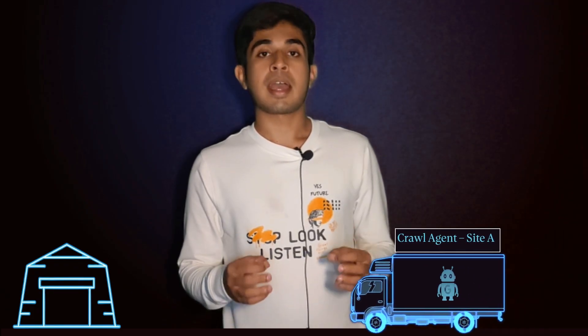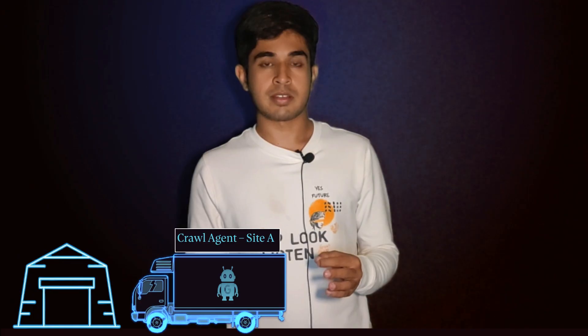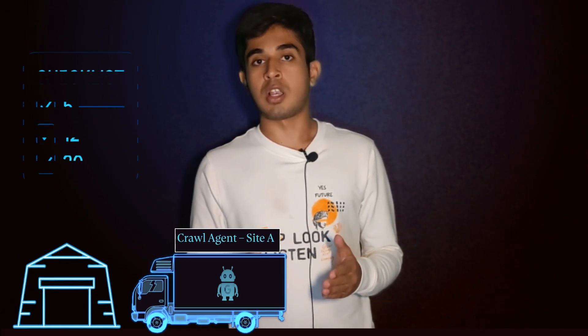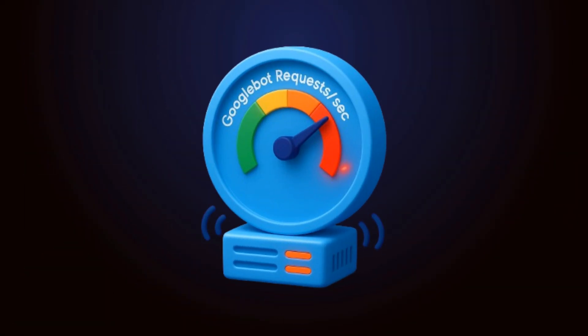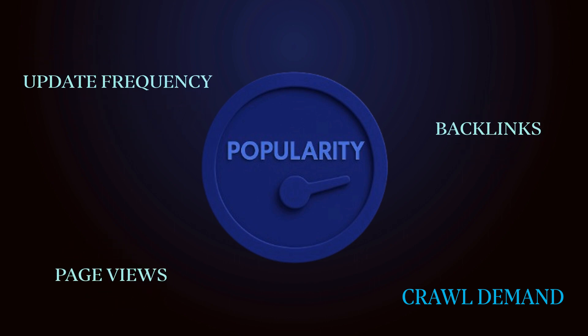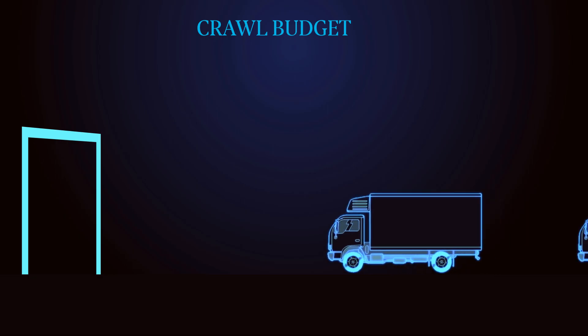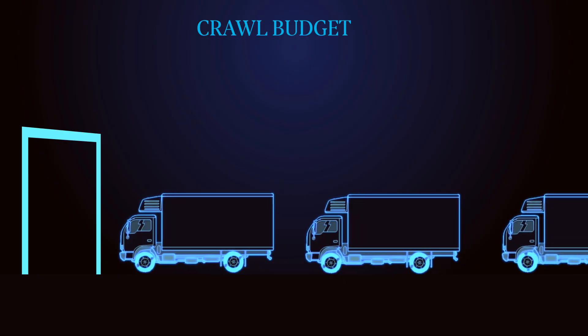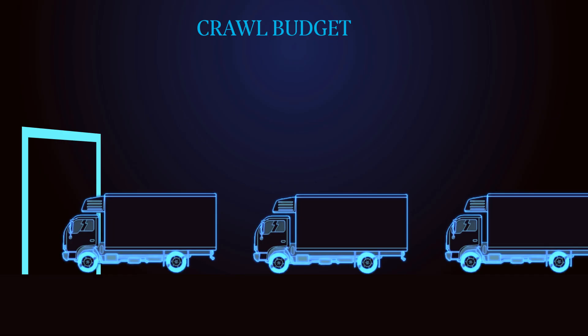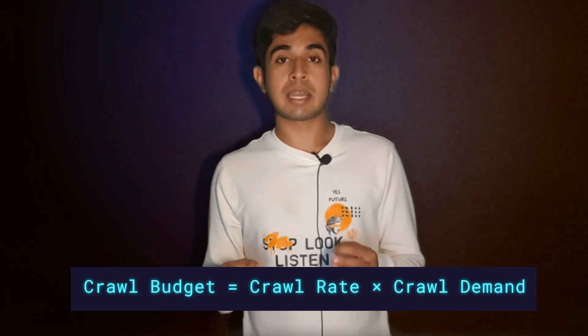According to Moz, 99.2% of search results have at least one backlink. Now let's talk about crawl budget. Crawling has limits, and the search engine assigns a crawl budget to every website — the number of pages that can be crawled in a given timeframe. Crawl rate is how quickly bots can scan your site without overwhelming your server. Crawl demand is how important or popular your pages are — it's about relevance, updates, and whether people care. Crawl budget equals crawl demand times crawl rate.